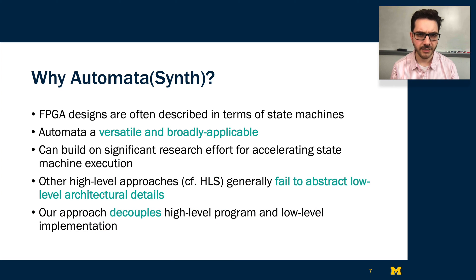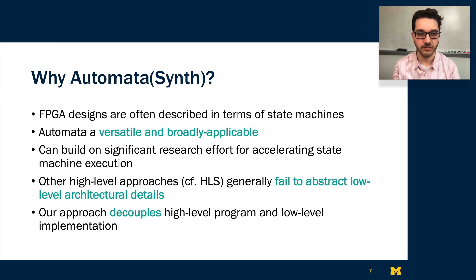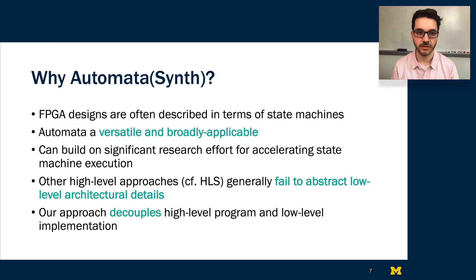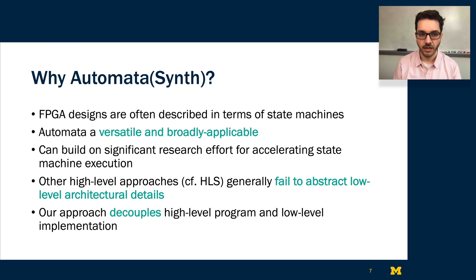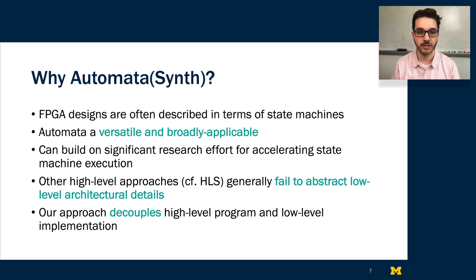Our motivation for choosing finite automata as this intermediate representation or abstraction is that we observe that FPGA designs are often already described in terms of state machines. So this automata representation is a good fit for the underlying hardware in an FPGA. Further, recent research has found that automata are a versatile and broadly applicable model of computation for supporting a wide variety of applications. We can build on the significant research effort for accelerating state machine execution, and we believe this has promise over other high-level approaches like high-level synthesis that generally fail to abstract low-level architectural details. Our design intentionally decouples high-level implementation details to gain performance on FPGAs even if the original software was not written with an FPGA in mind.